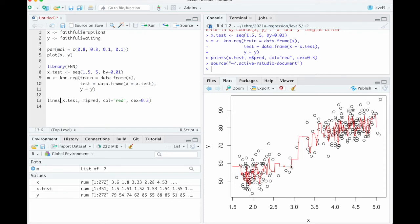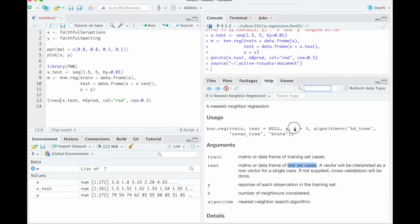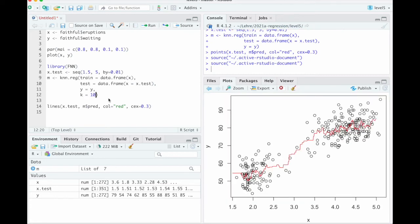So I believe that is our k nearest neighbor estimate. And that fluctuates quite a bit, which tells us that probably k is too small. And we have not thought about k yet. Let me see. The default seems to be 3. And we just can write here k equals 10 maybe to get a smoother picture. That looks better.